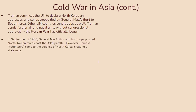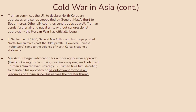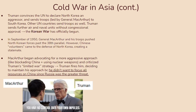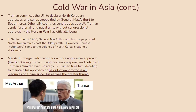In September of 1950, General MacArthur and his troops pushed the North Korean forces past the 38th parallel. However, Chinese volunteers came to North Korea's defense, creating a stalemate. During this time, MacArthur began advocating for a more aggressive approach — like blockading China and using nuclear weapons — and criticized Truman's limited war strategy, believing Truman was ensuring the US would never defeat communism. Truman fired him, deciding to maintain his approach because he didn't want to focus all resources on China since Russia was the greater threat.